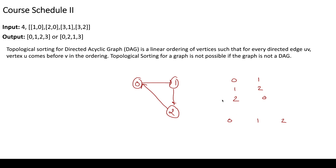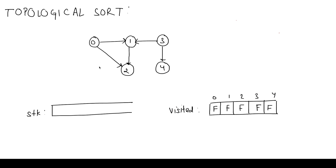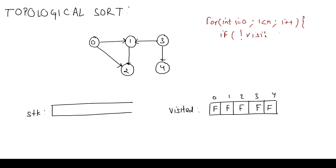Now let's see how to find the topological sorting for a given graph. We maintain a stack and a visited array, and use a simple DFS. We iterate over all vertices: for each i from 0 to number-of-courses, if visited[i] is false, we call DFS for vertex i.